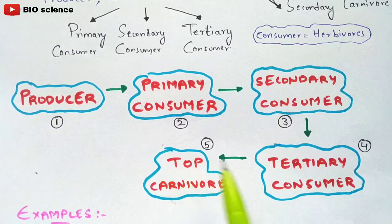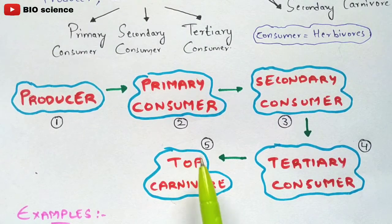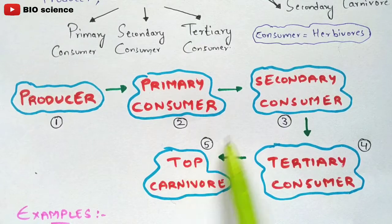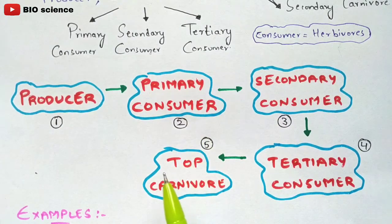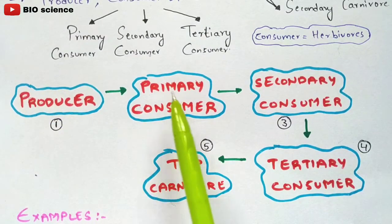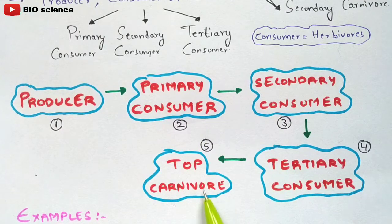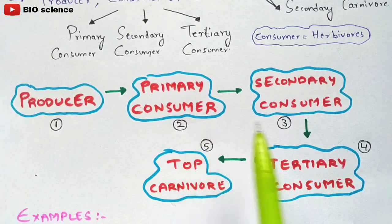One very important thing to remember is that it is not compulsory that the top carnivore should feed only upon the tertiary consumer. It can also feed upon the secondary consumer directly, or it can feed directly upon the primary consumer, or even directly upon the producer. So it is not compulsory that the top carnivore should consume only the tertiary consumer — it can consume the producer, primary consumer, or secondary consumer instead.